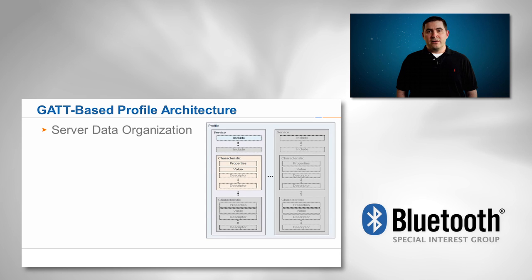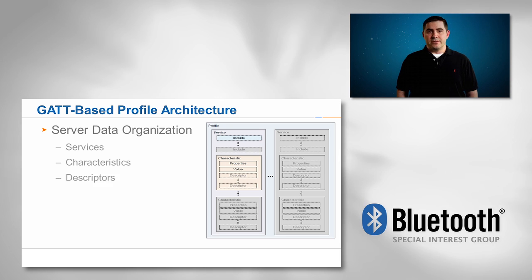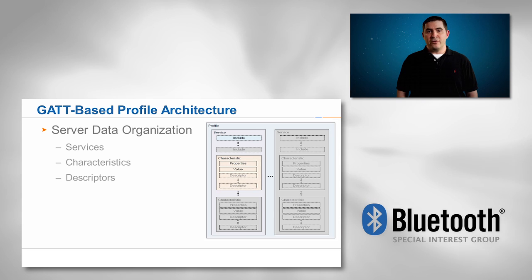The GATT-defined data organization on the server is composed of services and service data stored in objects called characteristics. Characteristics, or service data, can further be described within the characteristic using descriptors. Characteristics also contain properties that describe how the server interacts with the clients.